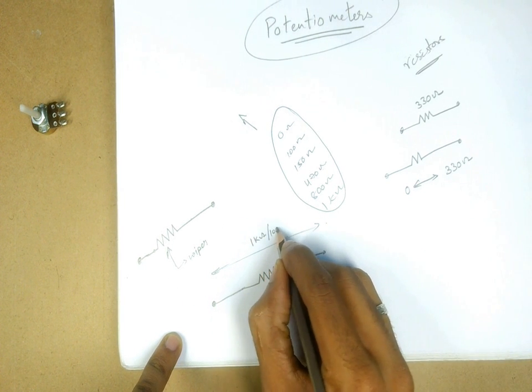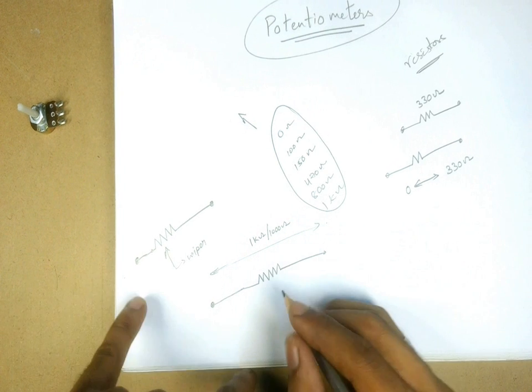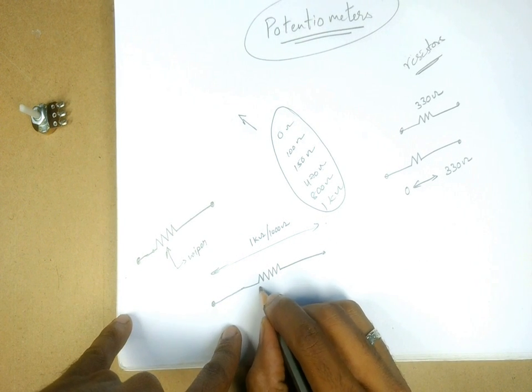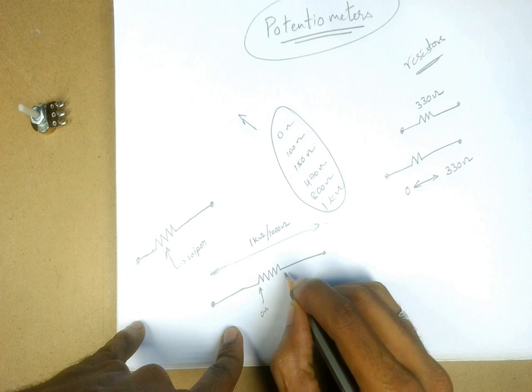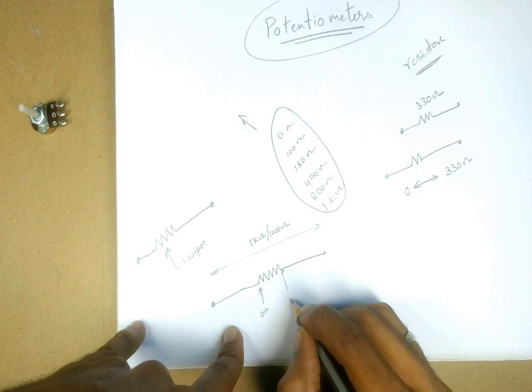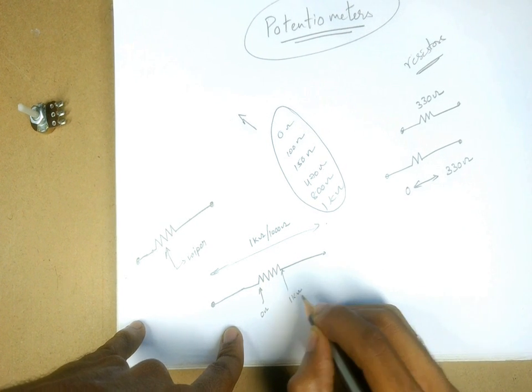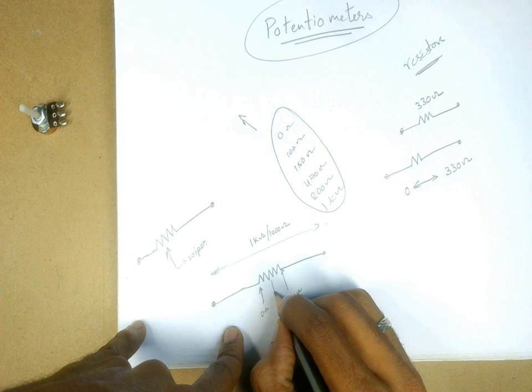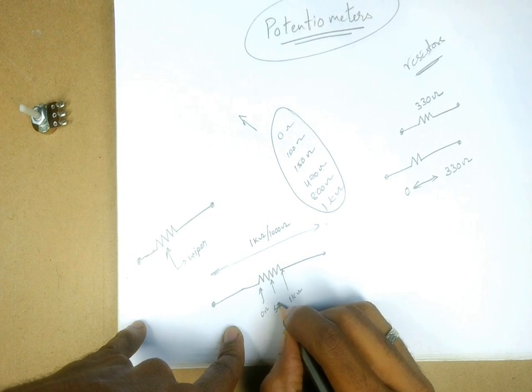Or 1000 ohms, where I will be considering the resistance based on the leftmost pin and the wiper. If I keep the wiper here, the resistance will be 0 ohms, and if I keep it at this end, it will be 1000 ohms. If I keep it somewhere around the center, it will be close to 500 ohms.